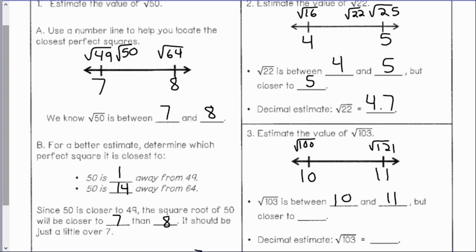It's closer to 10 — only 3 spaces away. Comparatively, it's 18 spaces away from the square root of 121. So a good decimal estimate for the square root of 103 would be about 10.1.